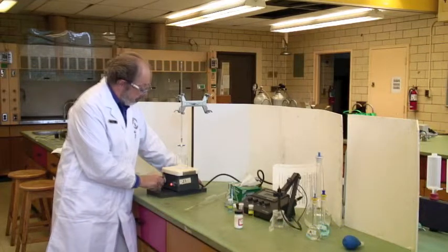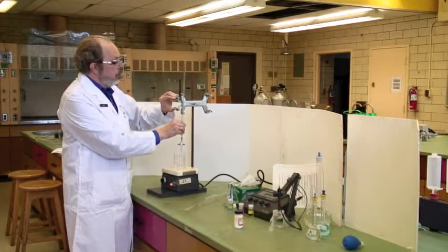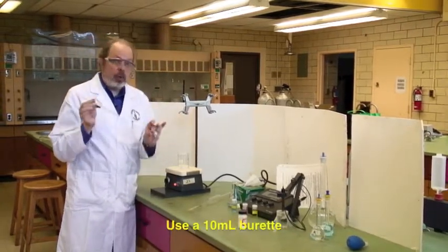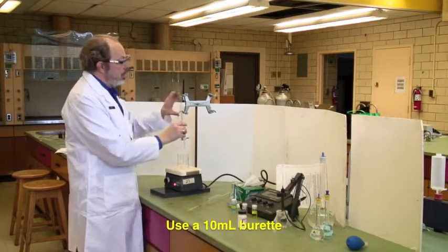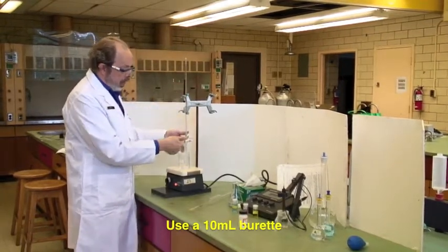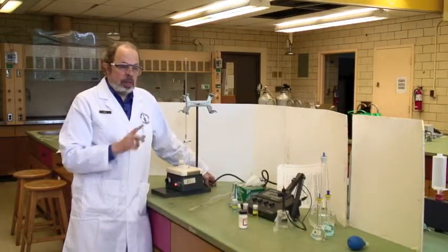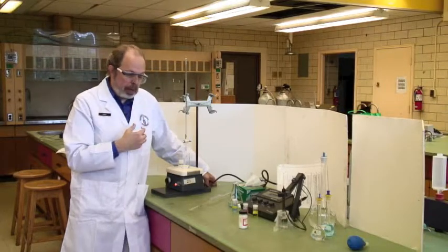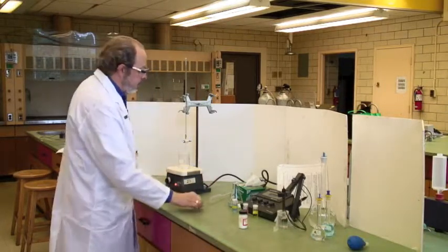When you're ready, turn the stirrer on. You'll be titrating with sodium hydroxide using this small 10-milliliter burette. Add small amounts from the burette into the titration vessel. The protocol tells you how much to add at various times.